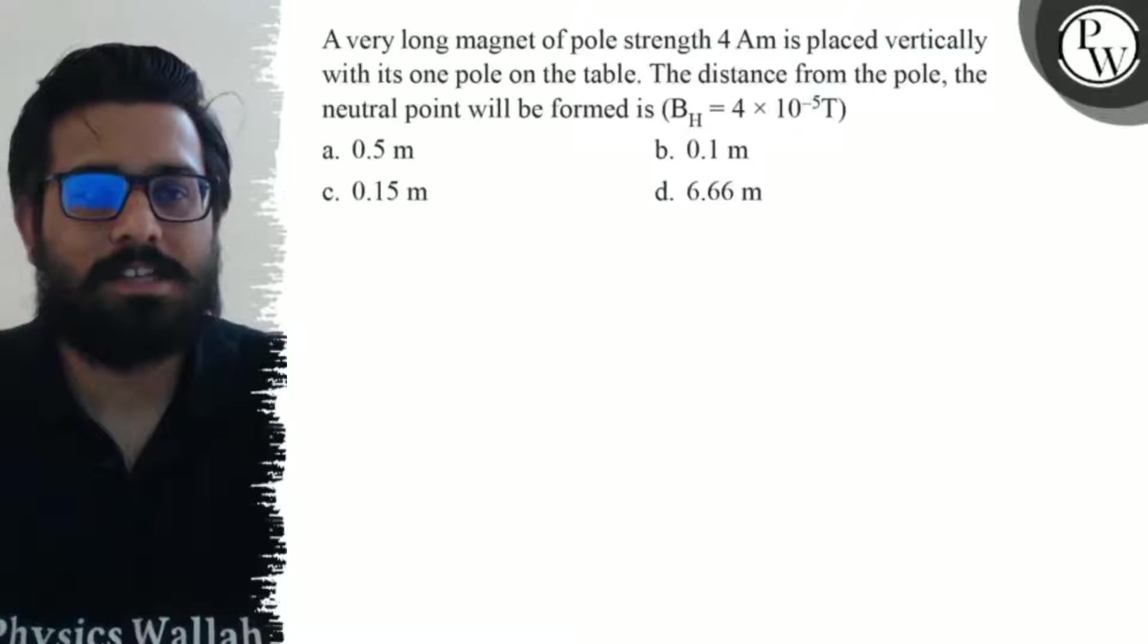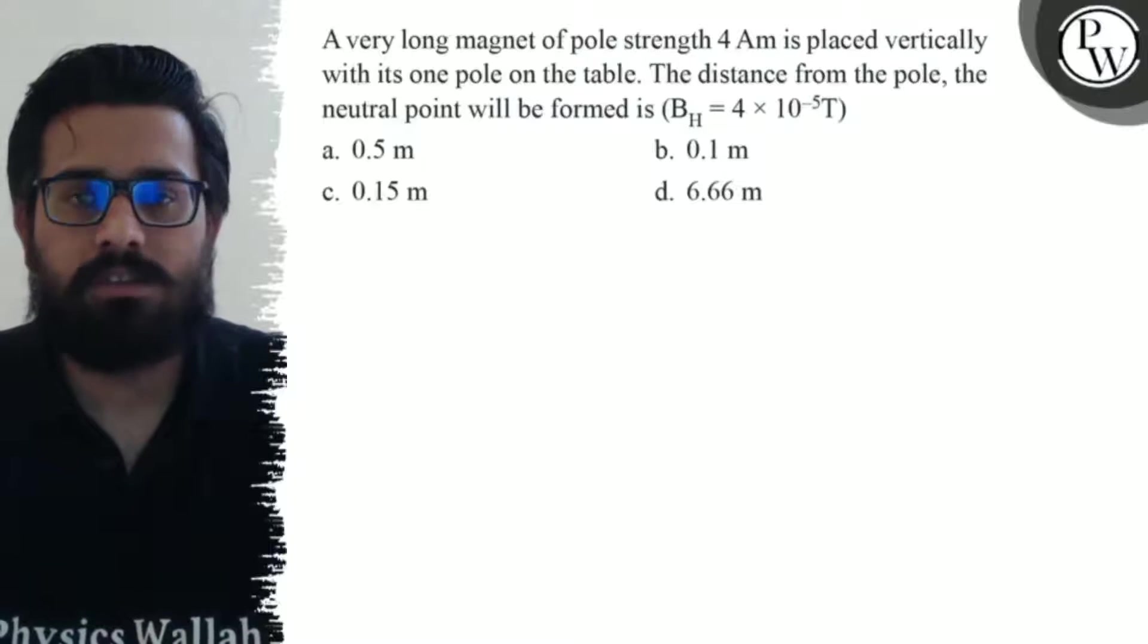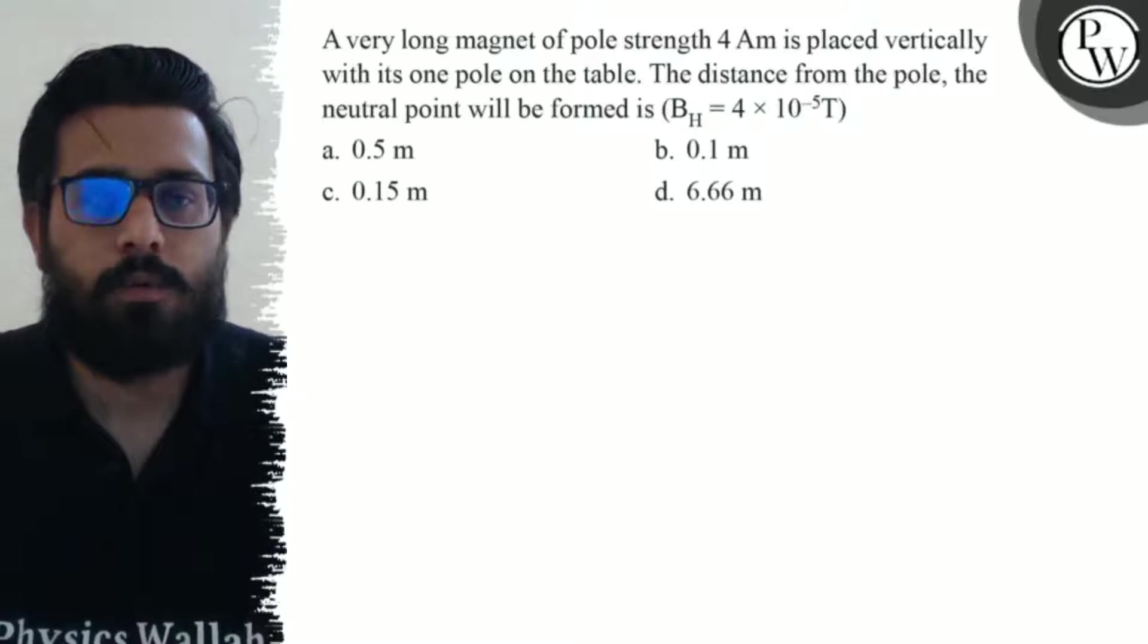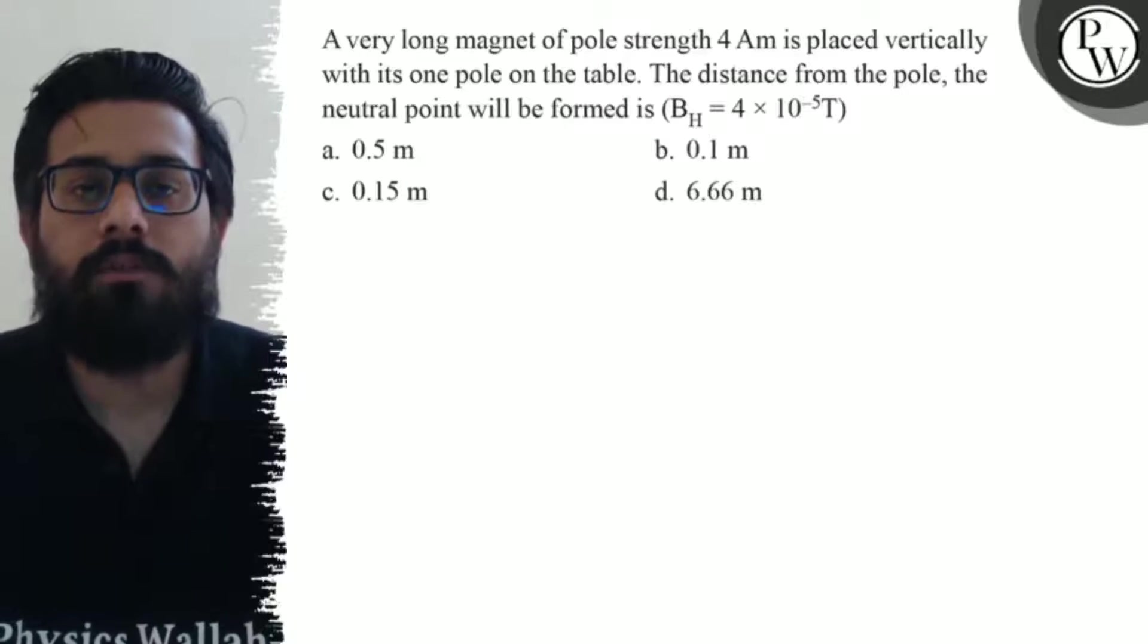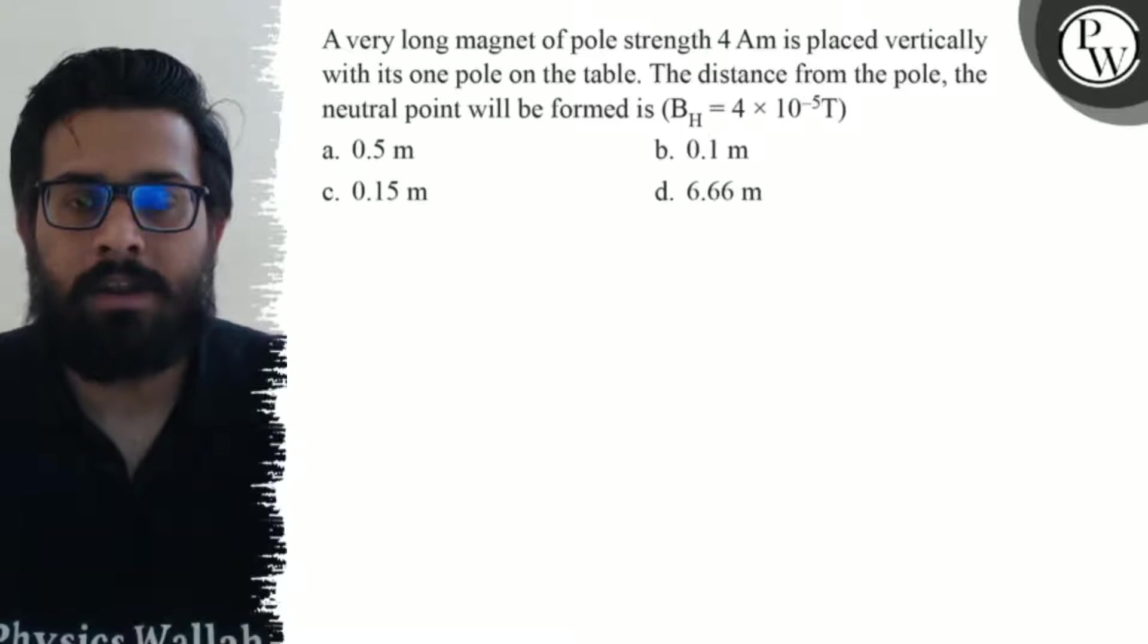A very long magnet of pole strength 4 ampere-meter is placed vertically with its one pole on the table. The distance from the pole to the neutral point will be formed.